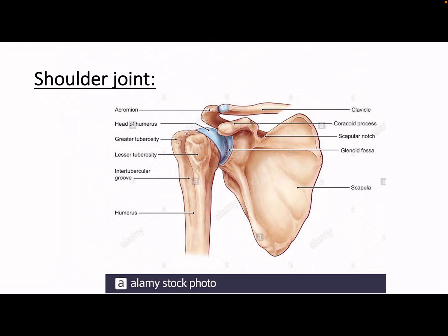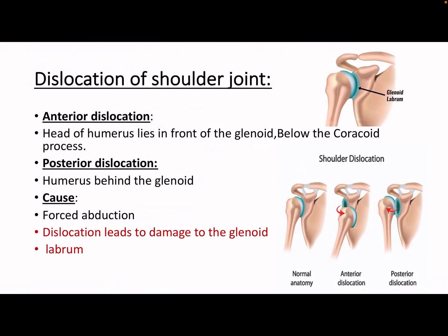Now let's cover the shoulder joint. You should know the basic bony anatomy. This is a posterior view - you are standing behind the person and seeing all the structures from there. This is the clavicle, this is the acromion process, this is the head of the humerus fitted in the glenoid fossa. Remember the word glenoid fossa. Also note the greater tuberosity, lesser tuberosity, the intertubercular groove between the two tubercles, the coracoid process, and the scapular notch.